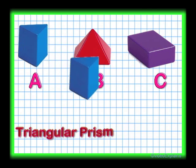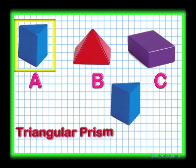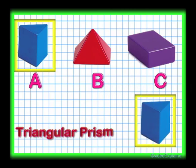Well, you are right. Shape A is a triangular prism. The color of the triangular prism is blue. Awesome!